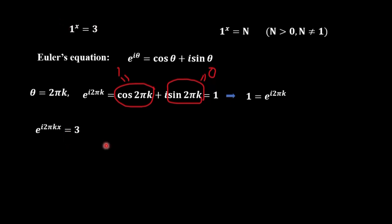Next step is to take natural logarithm from the left and right-hand sides. The left-hand side we can represent in this form, and the right-hand side remains log 3. Then, we are almost done. We divide it over i2πk.